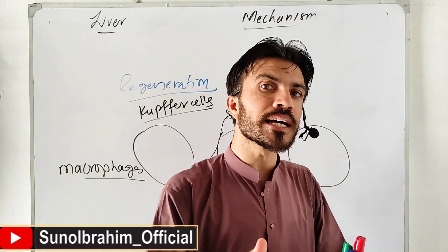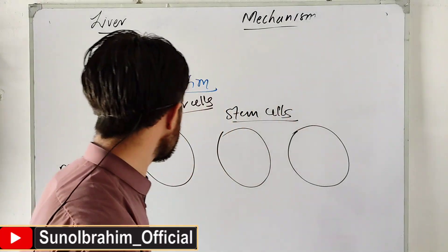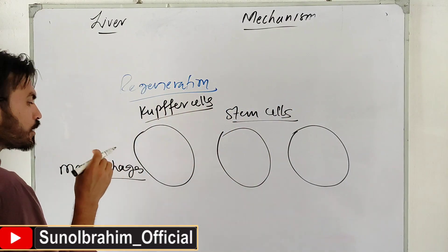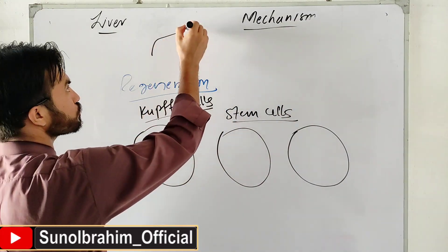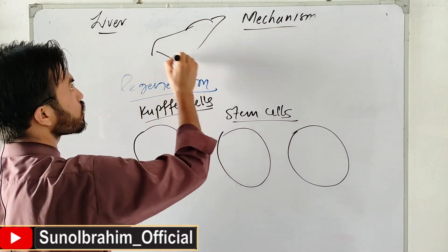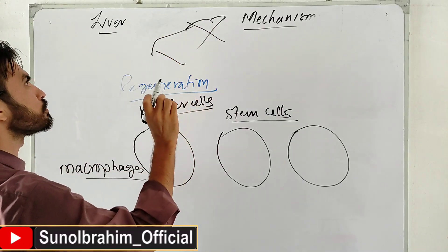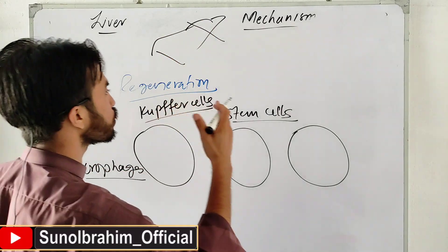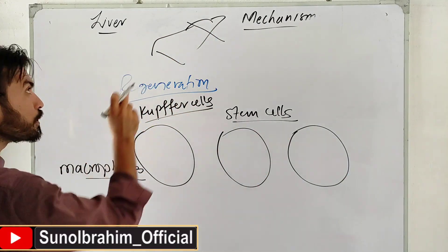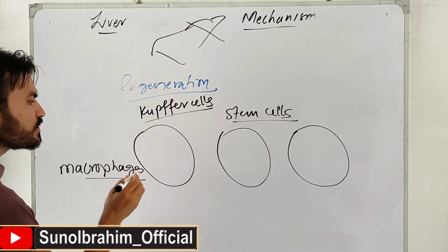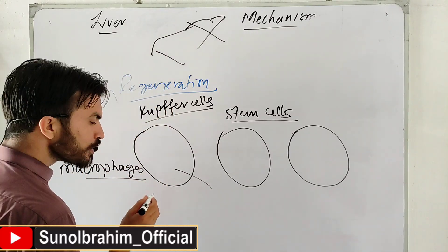Kupffer cells help regenerate the liver. Even if the liver is cut - for example during surgery or if part of it is removed - the remaining liver starts regenerating. Hepatocytes proliferate to restore liver mass.